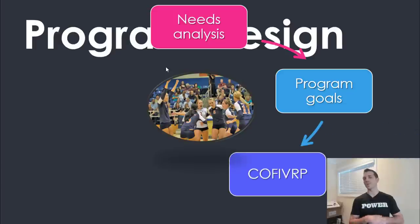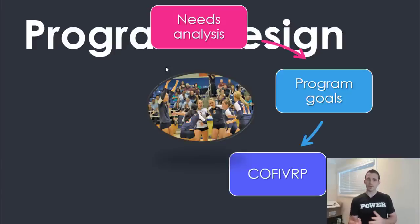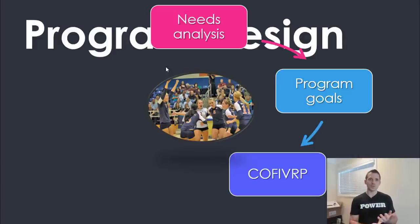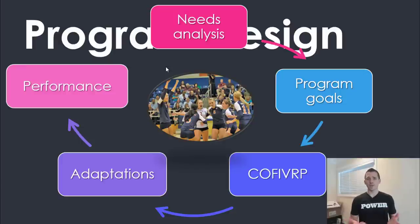After you've identified the goals, you write the program and adjust the modifiable variables — the COFERVERP acronym covers seven of them: which exercise to choose, which order to do them in, how much volume, how much frequency, how much exposure, and things like that. If you do that properly, you will get the adaptation you're looking for, and hopefully a resulting change in performance.